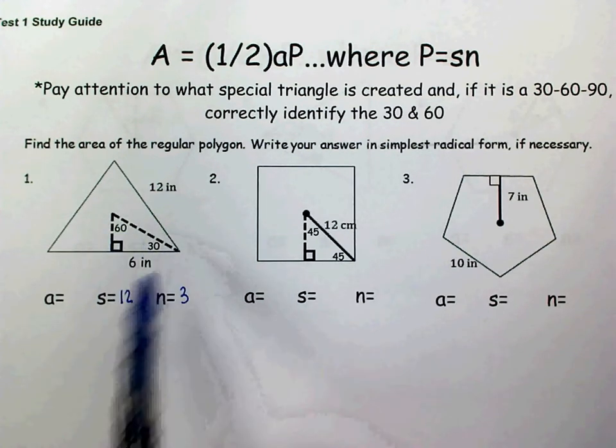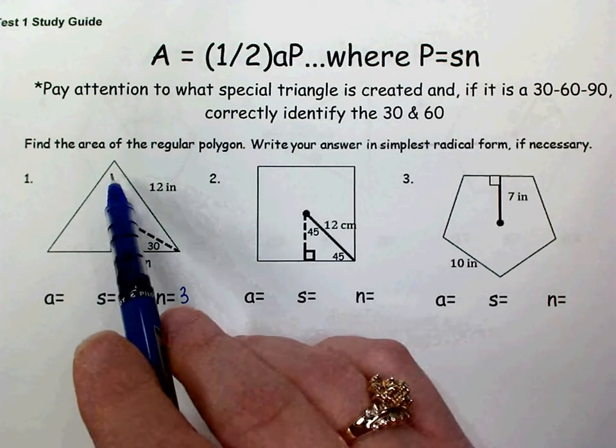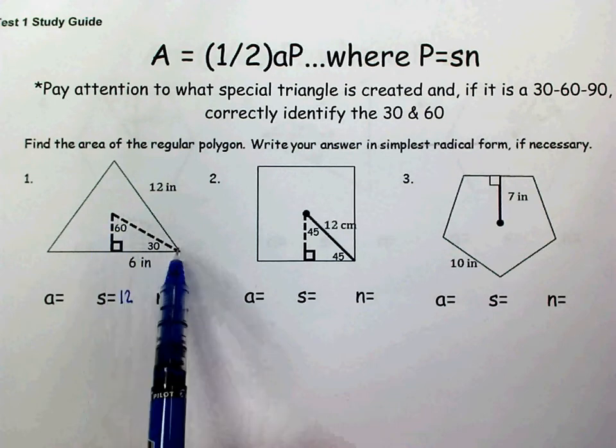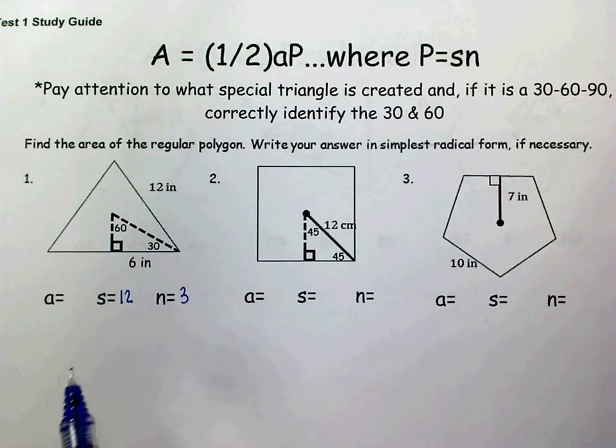Draw in a radius going to the vertex of the equilateral triangle. Now since each one of the angles of an equilateral triangle are 60 degrees, and that radius is bisecting that 60 degree angle, your 30 degree angle goes there at the vertex.